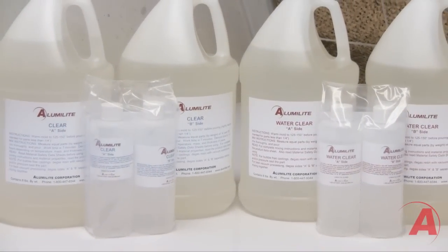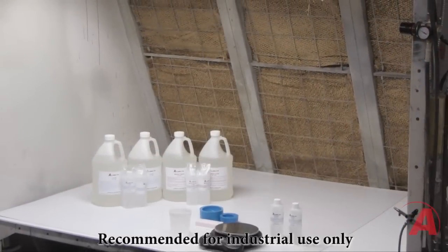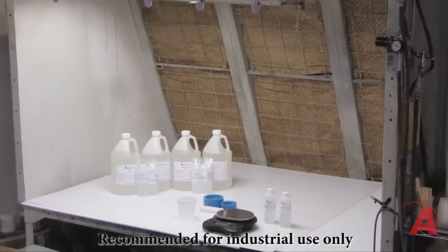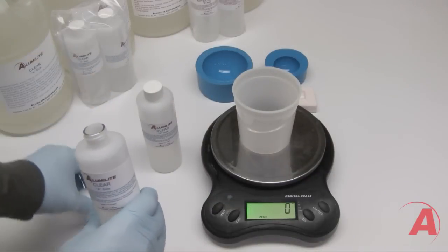Alumalite Clear and Alumalite Water Clear are two-part casting resins that produce optically clear castings. In this demonstration, we're going to show you how to mix both of these systems by weight. Here we're measuring out approximately 70 grams per side.